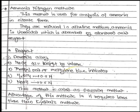The next procedure is the ammonia nitrogen method. This method is useful for the analysis of ammonia in nitrate form — they are reduced in alkaline medium. Ammonia is liberated and absorbed by a standard acid reagent. This method is called the Devarda method because Devarda's alloy is used. The advantage of this method is it requires less time than the Kjeldahl method. Reagents include: Devarda's alloy, NH3 42% (w/v), methyl red or methylene blue indicator, H2SO4 0.5N, and NaOH 0.5N.